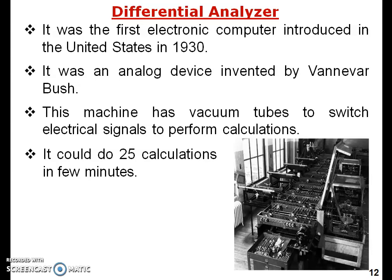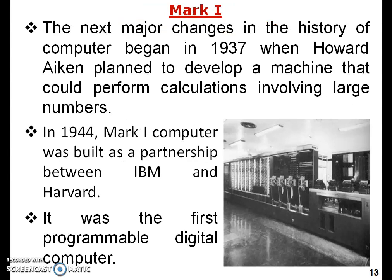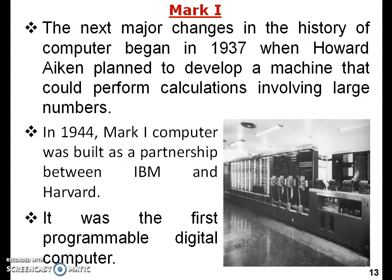The next major change in computer history began in 1937 when Howard Aiken planned to develop a machine capable of performing calculations involving large numbers. In 1944, the Mark One computer was built as a partnership between IBM and Harvard. It was the first programmable digital computer, marking the beginning of the digital computer age.